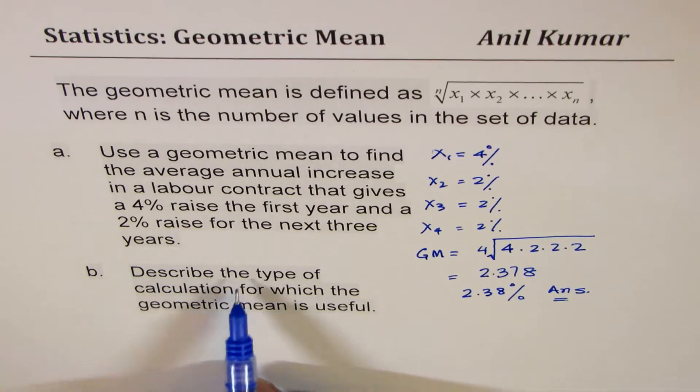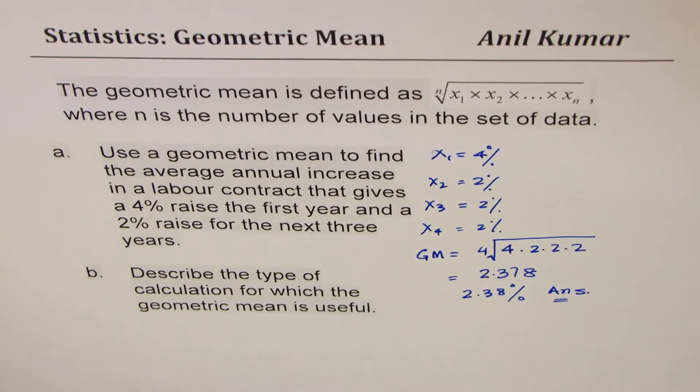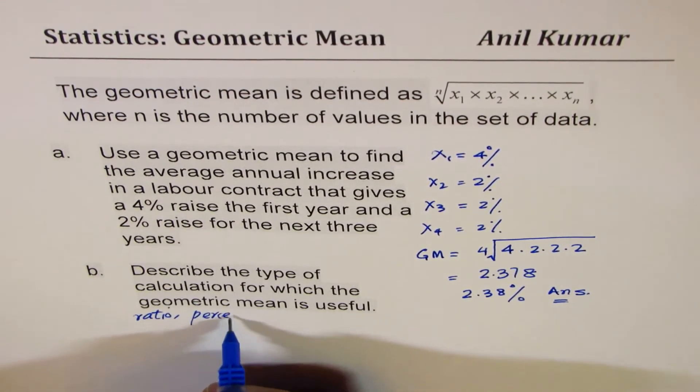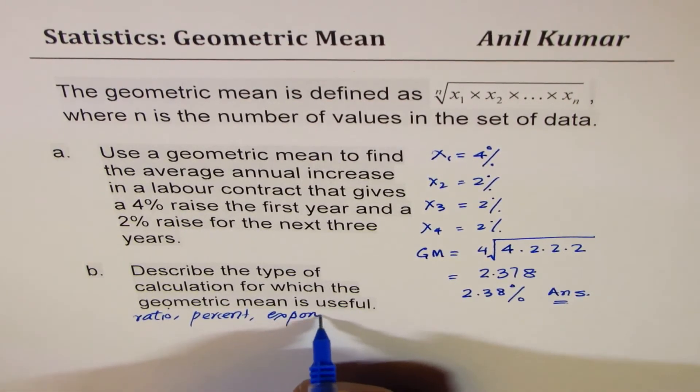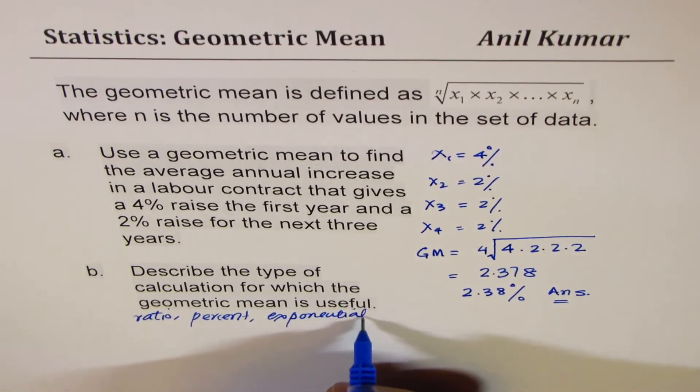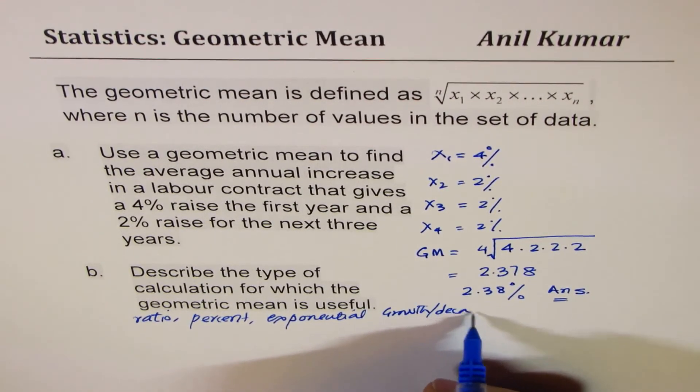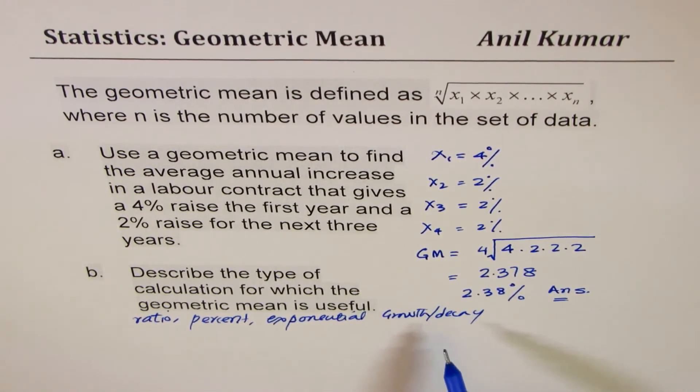Part B is, describe the type of calculations for which geometric mean is useful. Now, geometric mean is very useful when we consider cases where we are talking about ratios, percent, or exponential growth. You can say growth or decay. So where were the multiplications there? In those cases, geometric mean is very helpful.